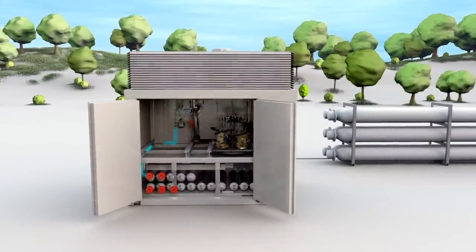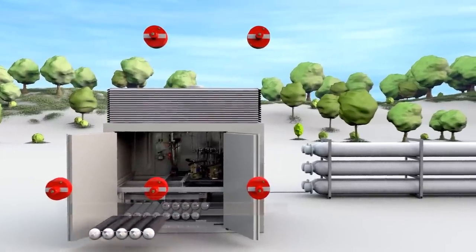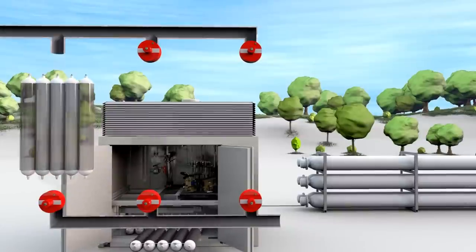Following the compression from a minimum of 5 bar inlet pressure to a maximum of 1000 bar outlet pressure, the hydrogen is temporarily stored in the high pressure vessels.